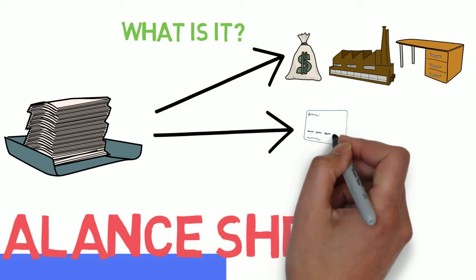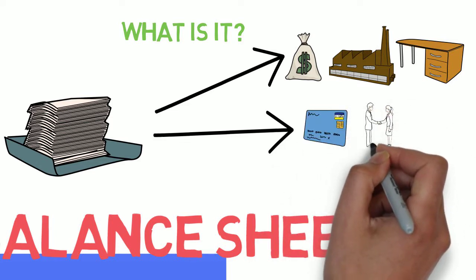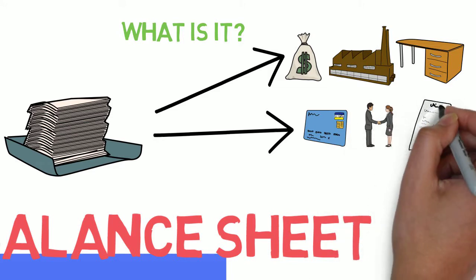The next one is liabilities which can be credit cards, employees' wages payable, any sort of loans, or anything bought on account that would have to be paid later.